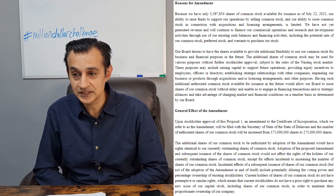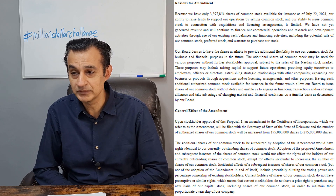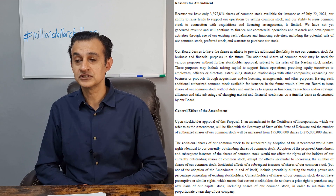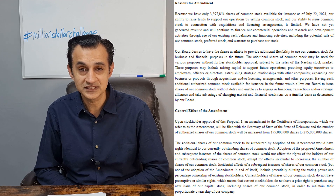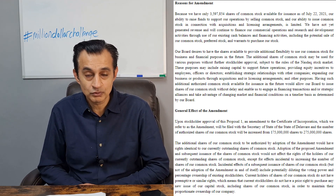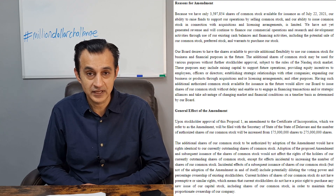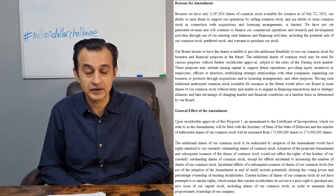Selling this additional amount of common stock is going to give them the ability to have more acquisitions and to improve their licensing arrangements, which at the moment are limited. They have not yet generated revenue, so as investors we do all know that. They are continuing to finance their commercial operations, research and development activities through their existing cash balances and financing activities — including the potential sale of common stock, preferred stock, and warrants. So this is the key reason for the share price going down — the additional issue of shares, nothing to do with business, FDA activities, or the research going on into COVID or the potential of their trials.